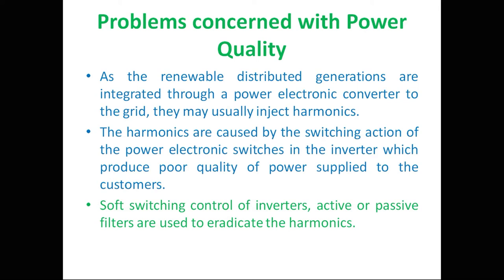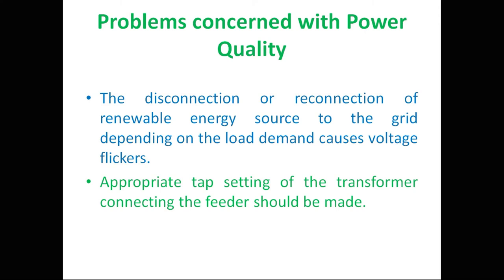Another power quality problem is voltage flicker. When we connect or disconnect a renewable energy source to the grid depending on load demand, voltage flickers occur. While connecting and disconnecting the distributed generation from the power grid, unwanted voltage flickers arise, and sometimes they can be very large and may damage the distributed generation or the power grid.